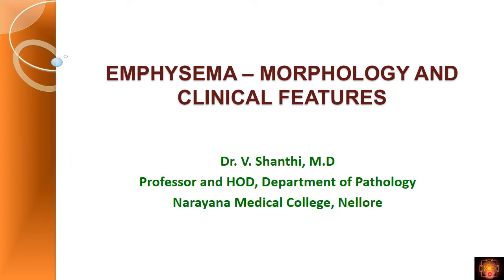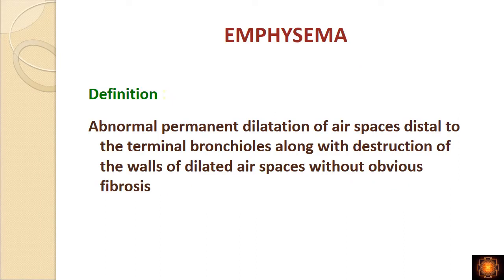Welcome friends. Today I will be talking about the morphology and the clinical features of emphysema. In my previous video I finished the pathogenesis, so in this continuation I will discuss morphology and clinical features. Emphysema is abnormal permanent dilatation of the air spaces distal to the terminal bronchioles, along with destruction of the walls of the dilated air spaces without obvious fibrosis.